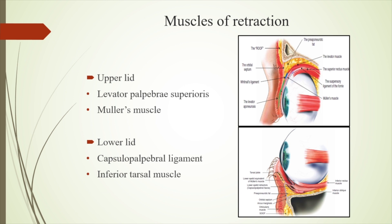The muscles of retraction: in the upper lid we have the levator palpebrae superioris and Muller's muscle, and in the lower lid, the analogous capsulopalpebral fascia and the inferior tarsal muscles.